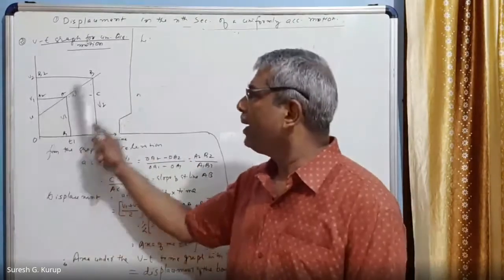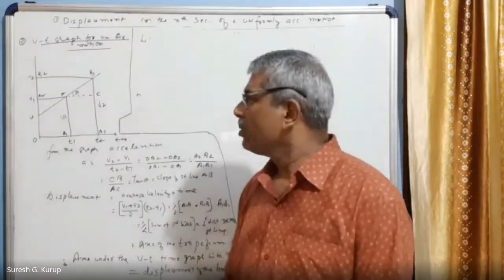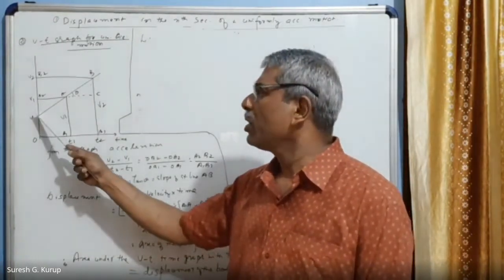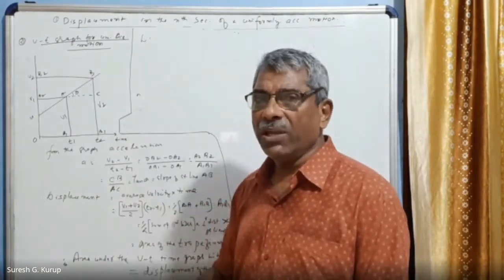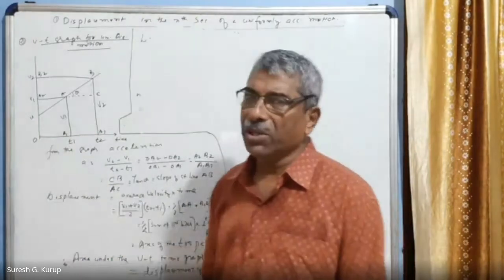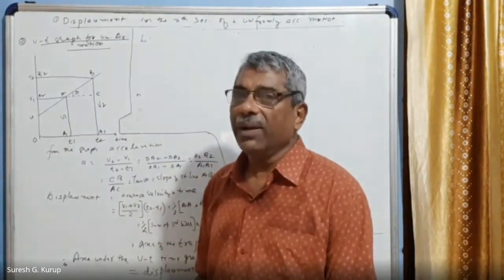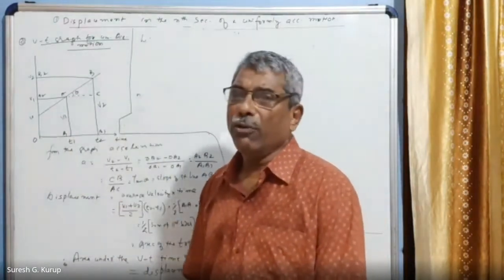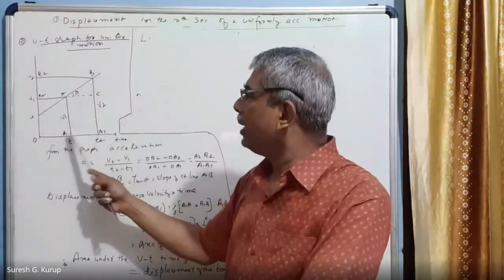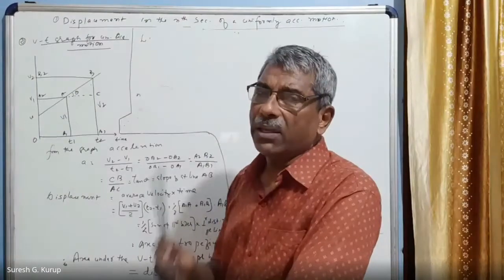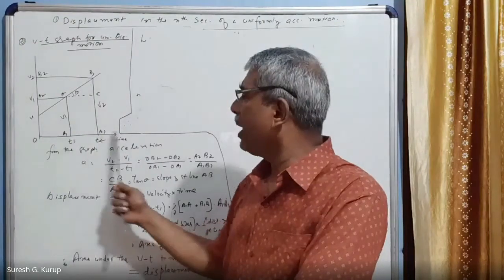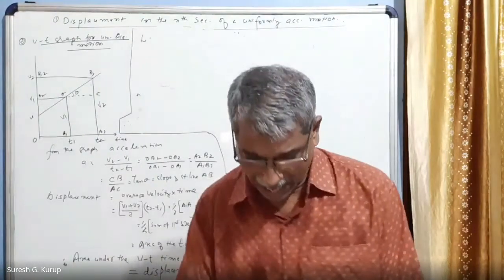In this case the body is already moving — it has an initial velocity. If the initial velocity were zero, the graph would start from the origin. This is a general situation where the body starts with an initial velocity and travels with uniform acceleration, so the vt graph is a straight line inclined to the x-axis. The horizontal axis is the time axis and the vertical axis is the velocity axis.